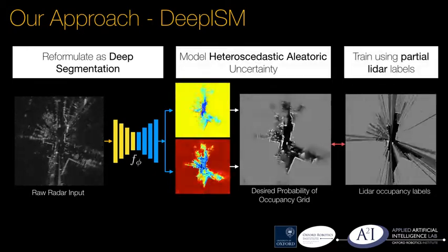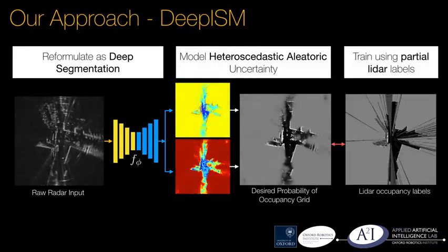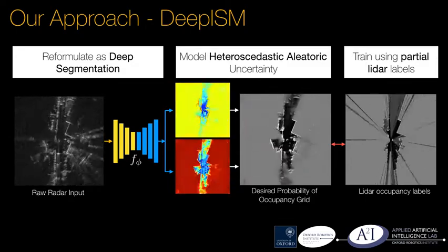Using labels generated from LiDAR, we are able to train our network by simply traversing an environment, facilitating lifelong learning.